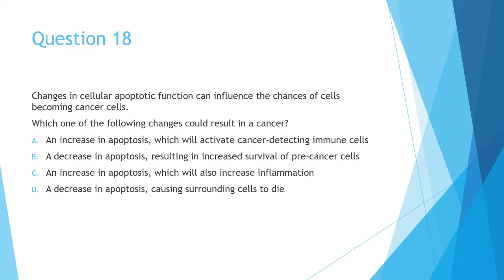Question 18 states, changes in cellular apoptotic function can influence the chance of a cell becoming cancer cells. It then asks which of the changes could result in cancer. Apoptosis is the process in which cells destroy itself. So for cancer cells which have unchecked growth, clearly the rate of apoptosis in cancer cells has to be lower than it is in normal cells. So you can rule out automatically A and C. Option D is wrong because apoptosis only causes cell death in the original cell. So the correct answer here is option B. This is one of the top five correctly answered questions.